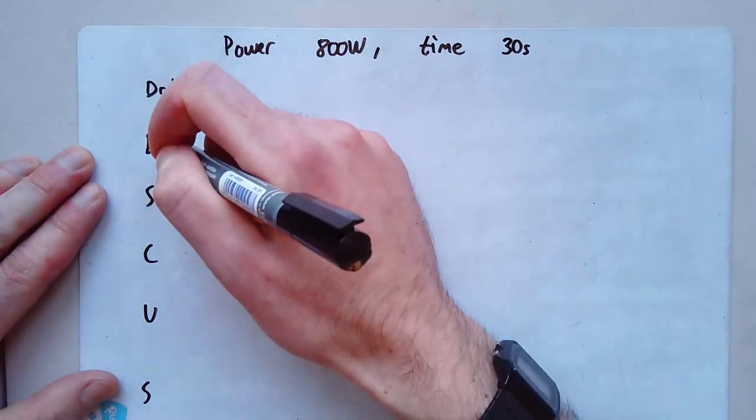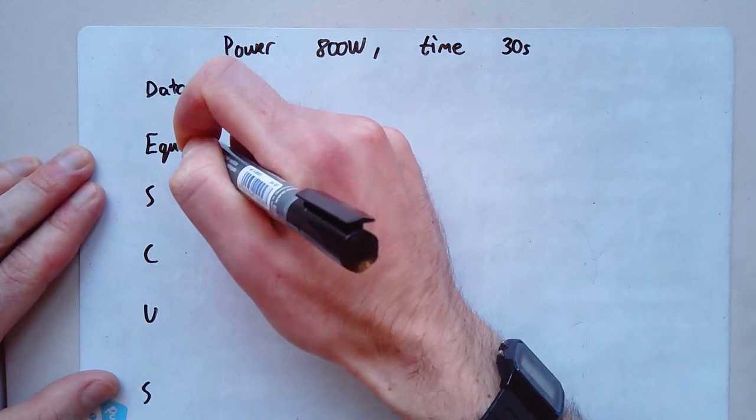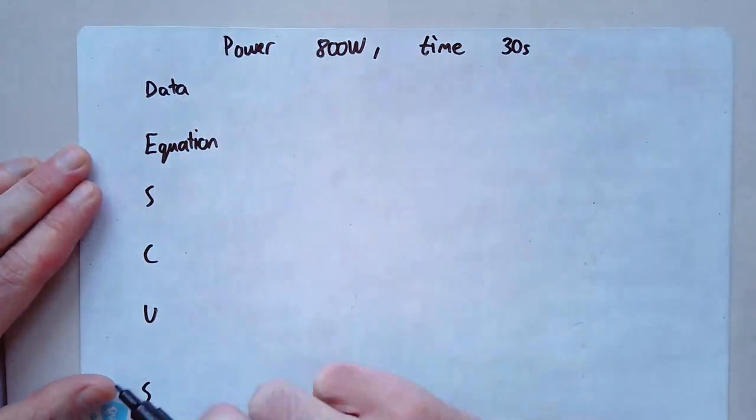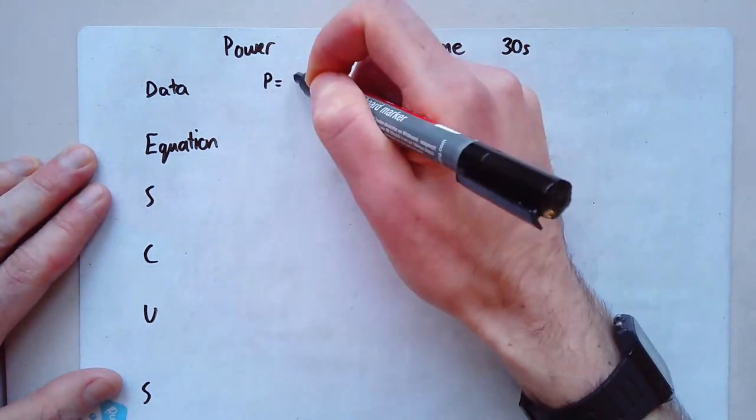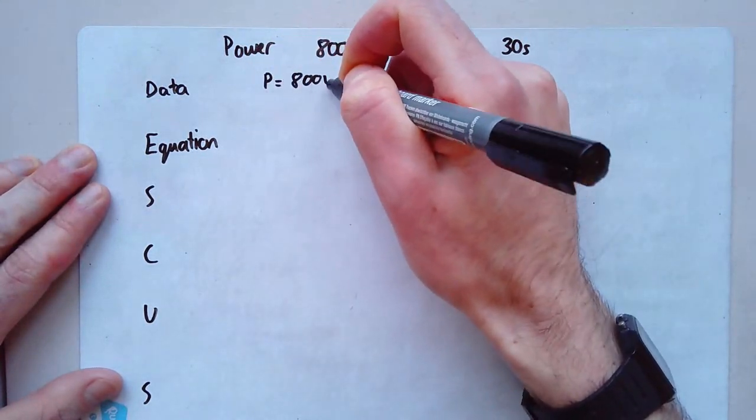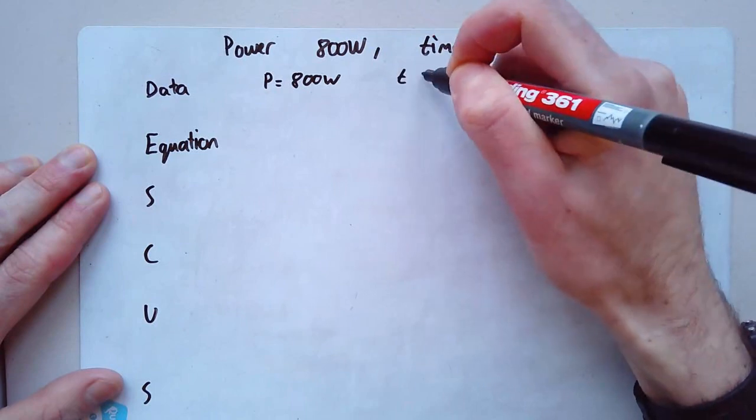The D stands for data. And that just refers to the data that you've got in the question. The E stands for the equation, which is the equation that you are going to use. So let's just do those two steps for a minute. So the data here is I've got a power of 800 watts and I've got a time of 30 seconds.